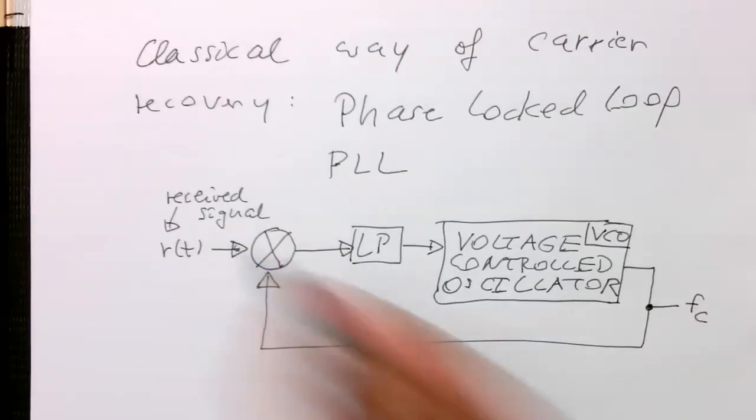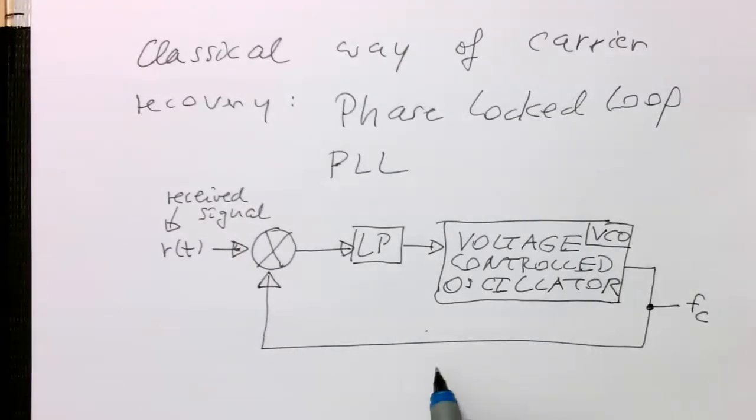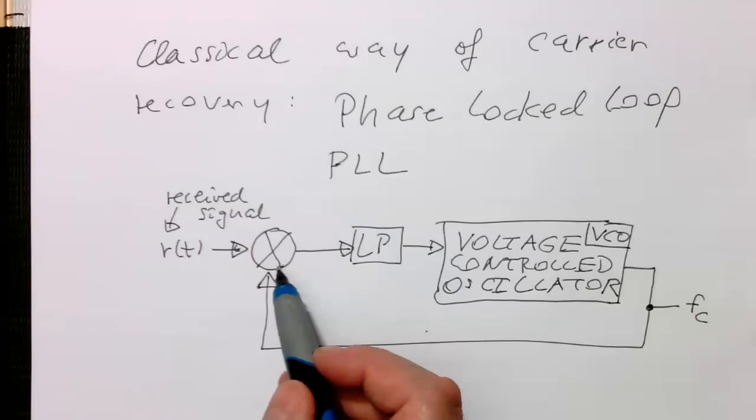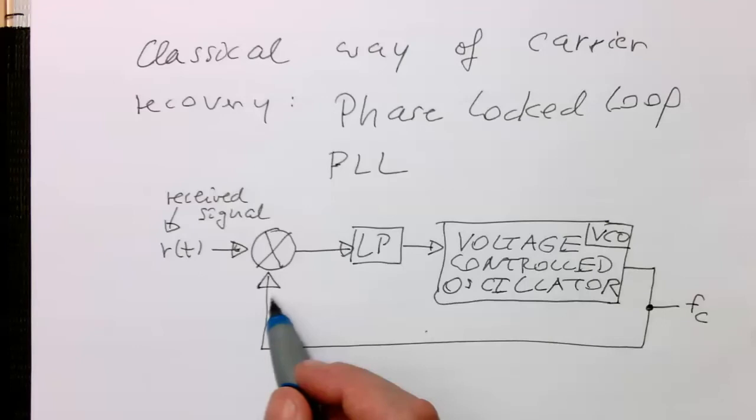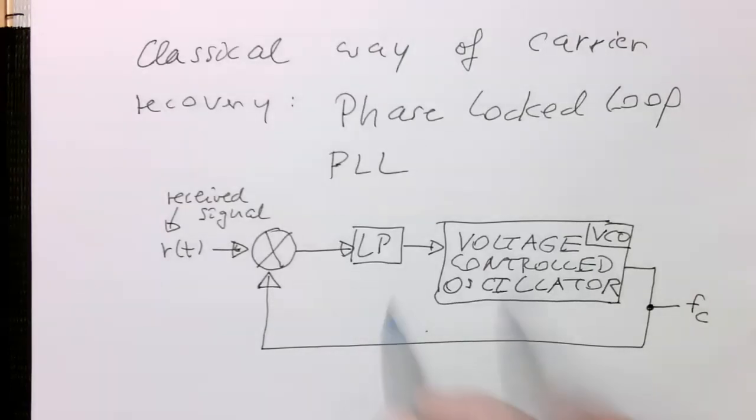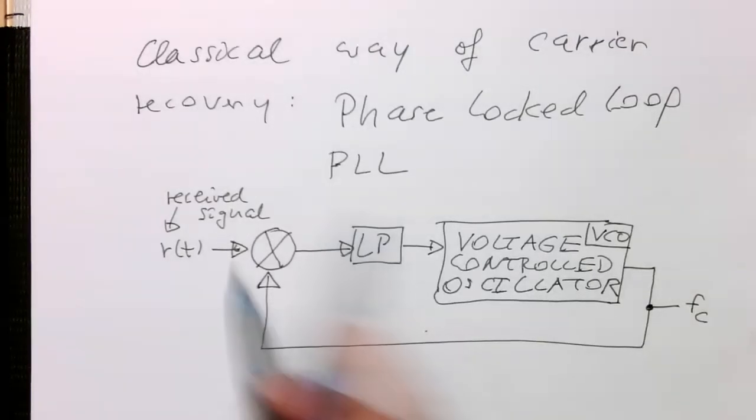So why does this work? We have a multiplication unit multiplying the input sine signal with another sine signal, doing low-pass filtering, and using a VCO. These two steps we know from our phase demodulators, so this works in a similar way.